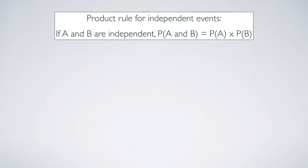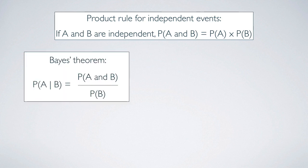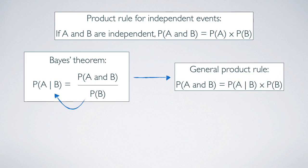Earlier, we saw that if two events are independent, their joint probability is simply the product of their probabilities. If the events are not believed to be independent, or we can't check whether they're independent, the joint probability needs to be calculated slightly differently. Since Bayes' theorem does not have an independence condition, we can rearrange it and calculate the joint probability of A and B as the product of the conditional probability of A given B multiplied by the marginal probability of B.